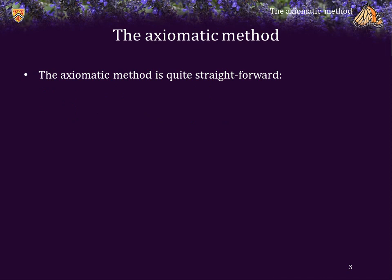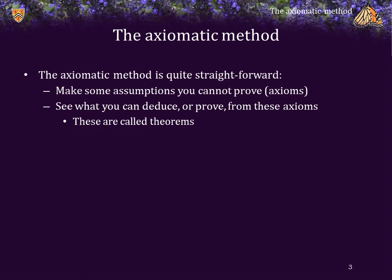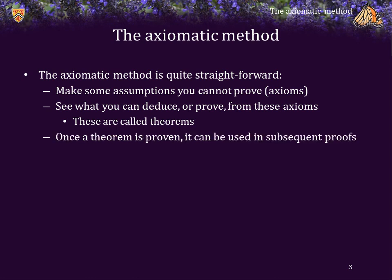The axiomatic method is quite straightforward — it's just an approach. Basically, you make some assumptions that you cannot prove; we call these assumptions axioms. We then see what you can deduce or prove from the axioms. Any further properties you can prove are called theorems. Once a theorem is proven, you can use it in subsequent proofs — you may have already done this in secondary school with elementary proofs.